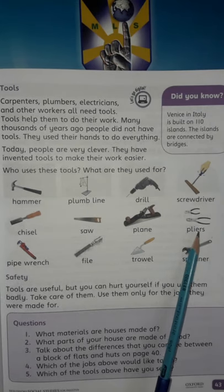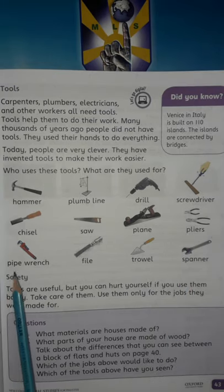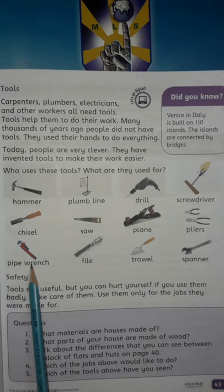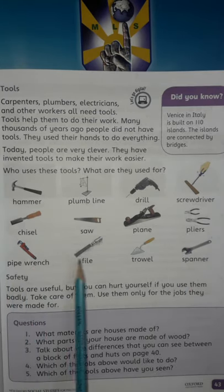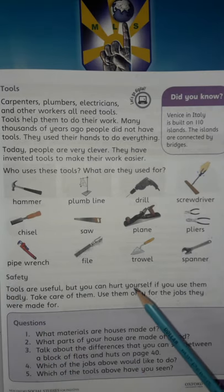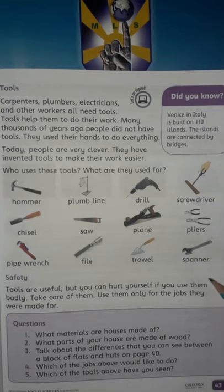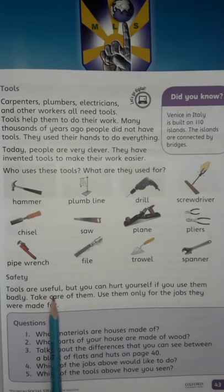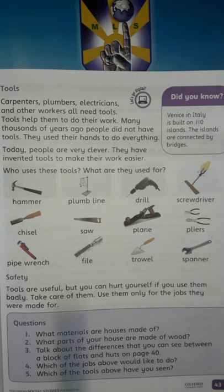Pliers: used to hold objects or bend pipes and other material. Pipe wrench: used to tighten or bend pipes. File: used to clean up surfaces. Trowel: used for digging. Spanner: used for turning a nut or a bolt.